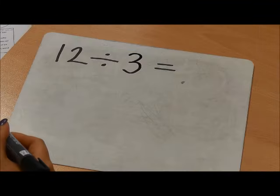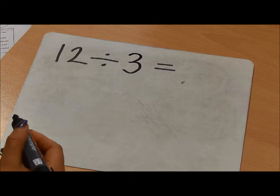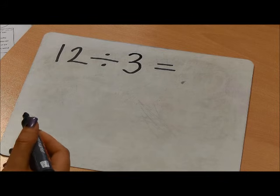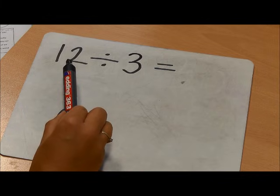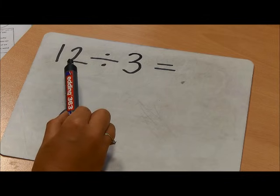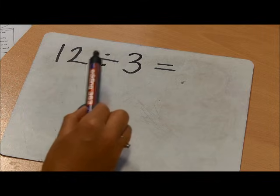For this one, I have the same calculation, but instead of doing division by sharing, I'm going to do division by grouping. So this time I'm going to do 12, and I'm going to group it into groups of three.